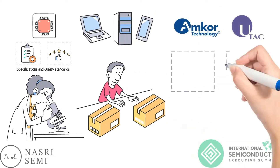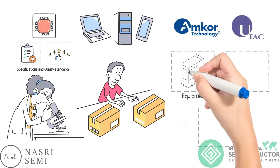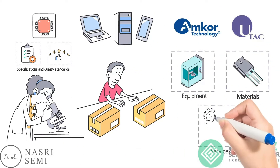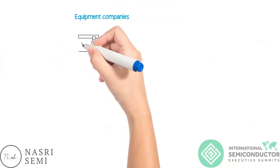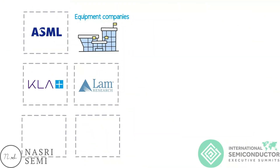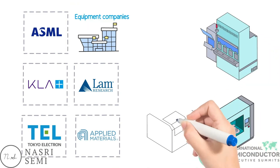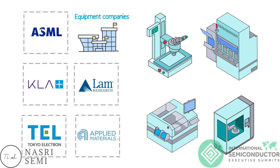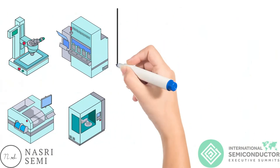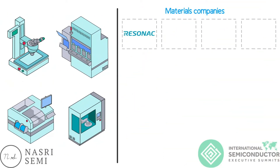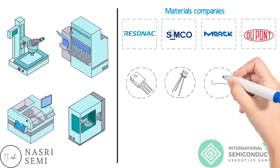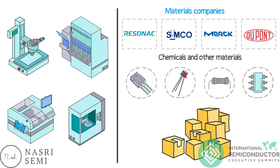Additionally, there are companies that provide equipment, materials and services to the semiconductor industry. Equipment companies like ASML, KLA, LAM Research, Tokyo Electron and Applied Materials supply the machines and tools used in the fabrication process, while material companies such as Resenac, Sumco, Merck and DuPont provide the chemicals and other materials used in the process.